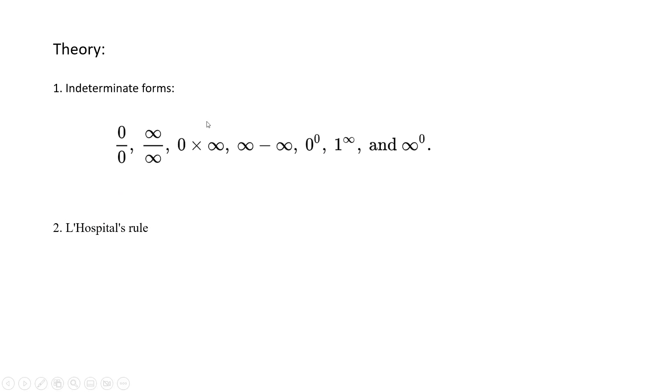Let's see what theory we need to know to solve this. We need to know the indeterminate forms. There are typically seven types of indeterminate forms which are given in this box. For two of these forms, namely the 0/0 form and the infinity/infinity form, we can apply L'Hôpital's rule to simplify the limits.